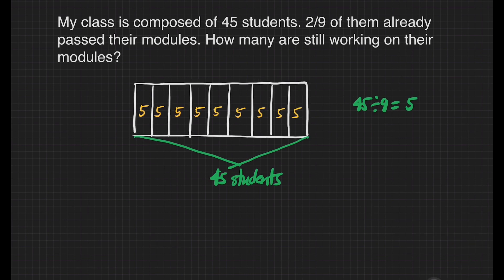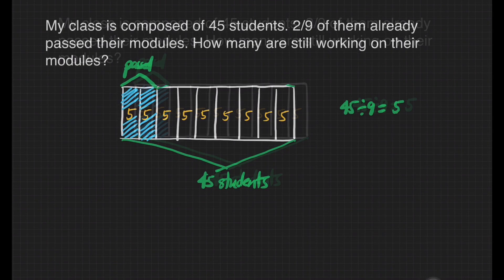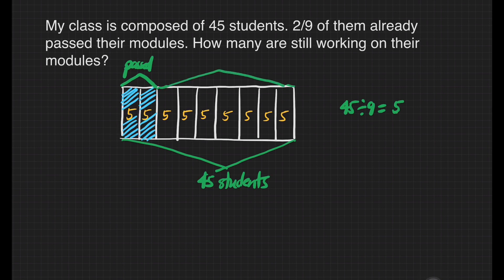Next, it says that two ninths of them already passed their modules, so we can shade those parts — that's 1 and 2 — for students who passed the module. The rest of the boxes are the students who are still working on the modules, and we are looking for that number.